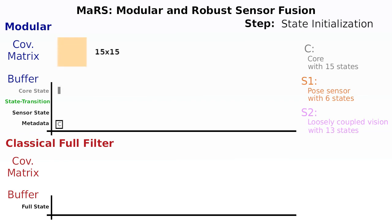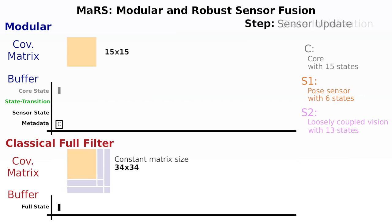The sequence starts with the initialization of the filter, which is triggered by an IMU measurement. This initializes only the core states and the 15 by 15 covariance matrix of the modular filter, and the full 34 by 34 covariance matrix for the classical approach, and stores it in the buffer. The modular approach essentially has no knowledge about additional sensors at this point.